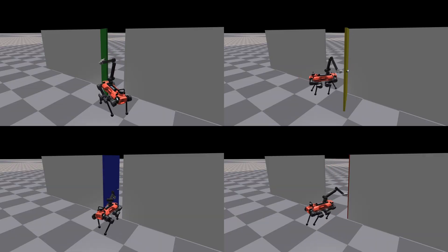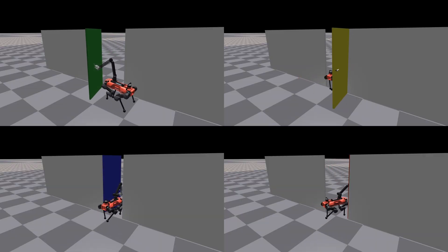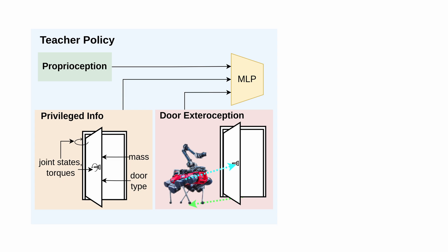We train in simulation and then transfer the policy directly to the real robot. First, we train a teacher policy using reinforcement learning with access to privileged information to learn the desired task behavior.